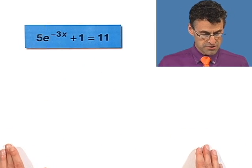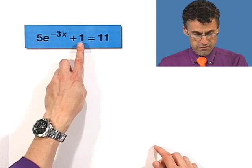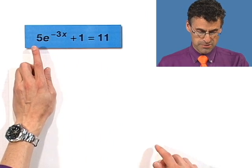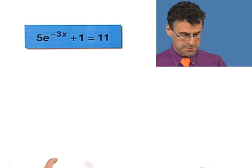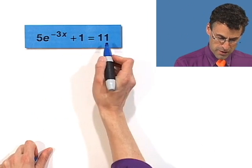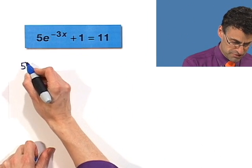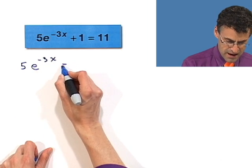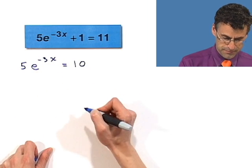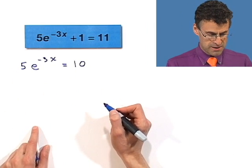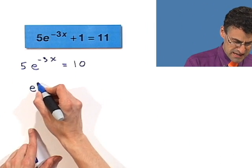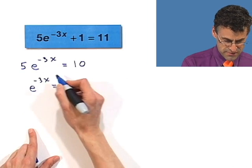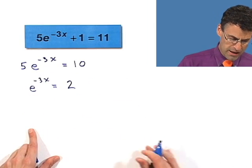Well, there's only one x here, and that's here. So what I'm going to do is I'm going to try to move this over by subtracting 1 from both sides. Once I do that, I'll get rid of the 5 by dividing both sides by 5. So those are the first two steps. Let's start there. So first I'm going to subtract 1 from both sides, so I have 5e to the negative 3x now equals 10. Now I'm going to divide both sides by 5, and I see e to the negative 3x equals, and 10 divided by 5 is 2.